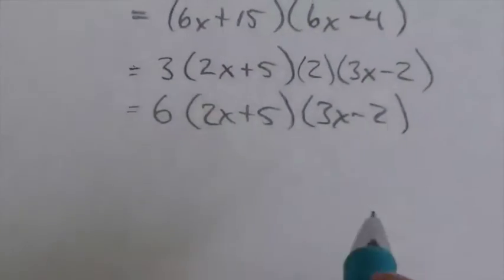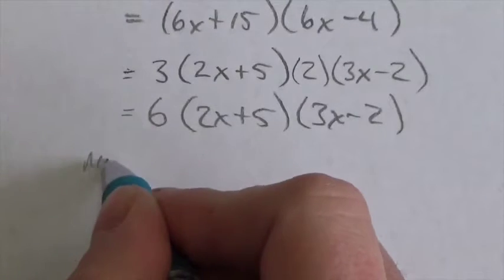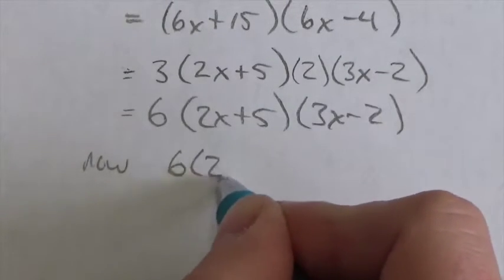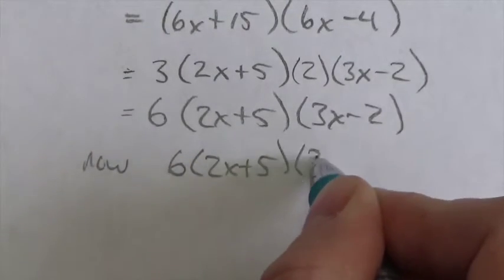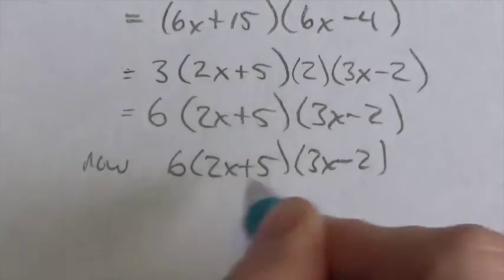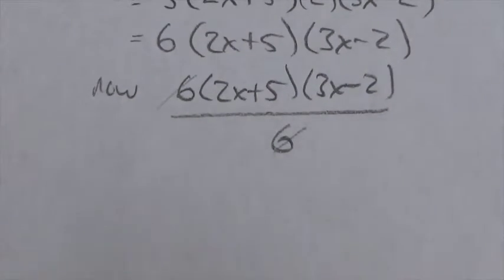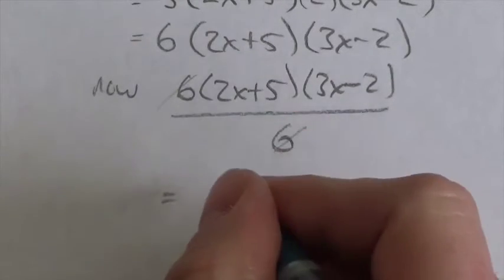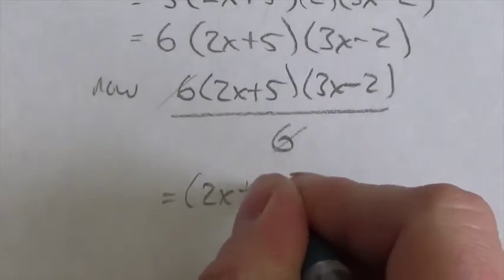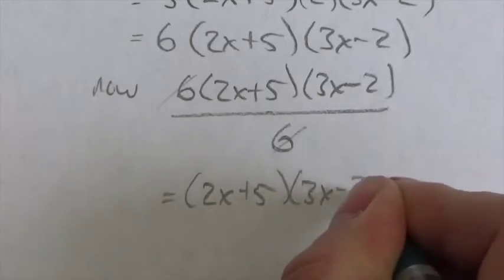Well, I changed the function here. So now, we're going to take this right here and we're going to divide this by 6 to cancel those two 6s, because I don't need that 6 anymore. And so my final answer from here is going to be 2x plus 5 times 3x minus 2.